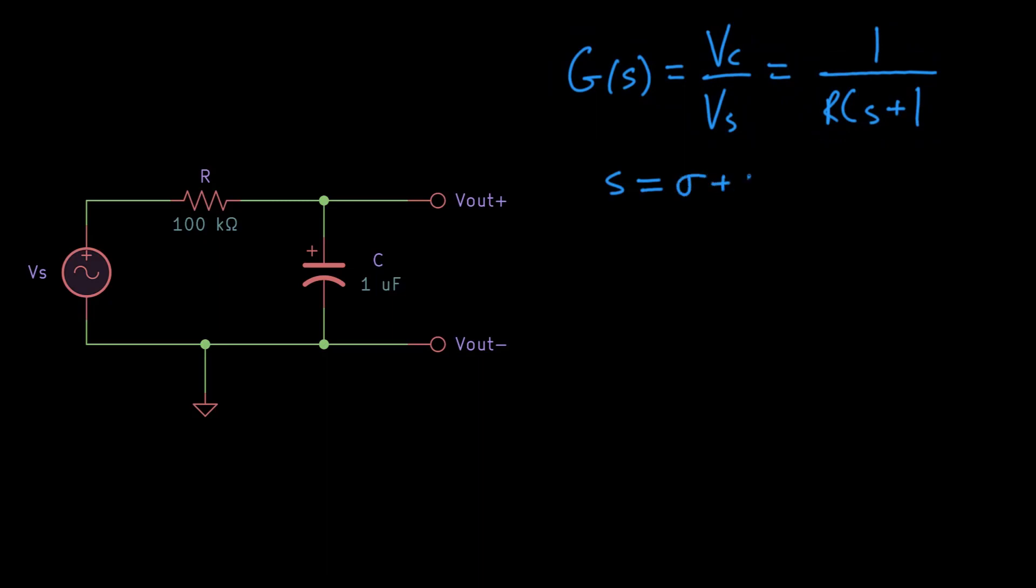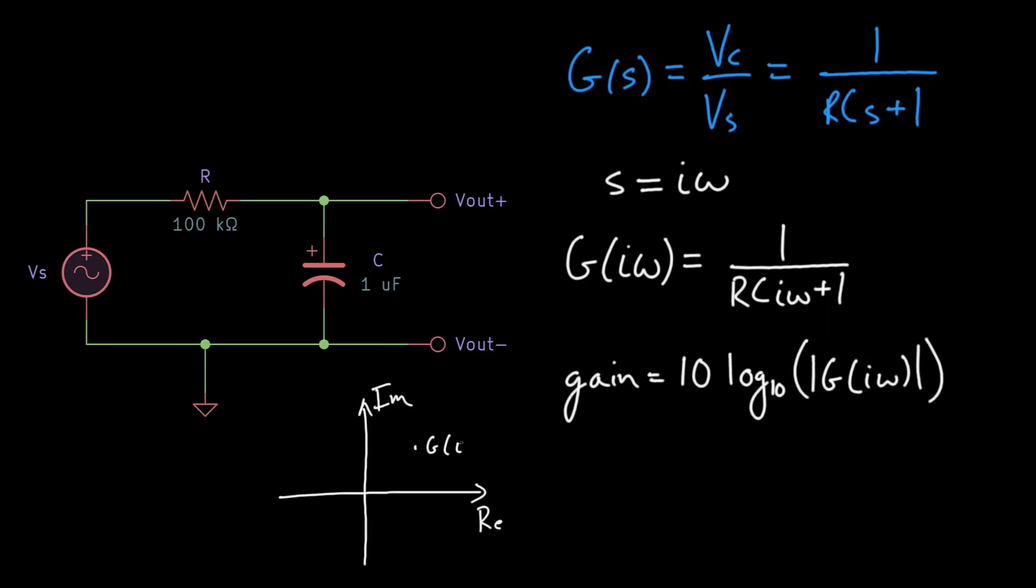The RC circuit transfer function models both the transient and long-term behavior of the system. Restricting the Laplace domain independent variable S to its imaginary term i omega limits our analysis to the long-term, periodic behavior. The gain is calculated by computing the magnitude of the complex transfer function and then taking its log. The phase is the depicted angle in the complex plane. It can be computed using the arc tangent.